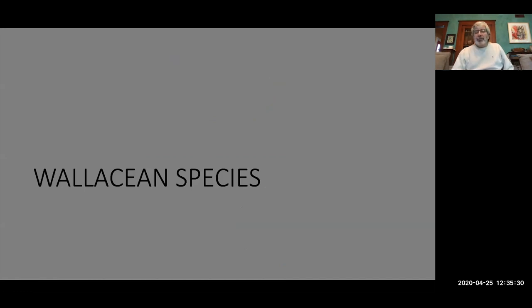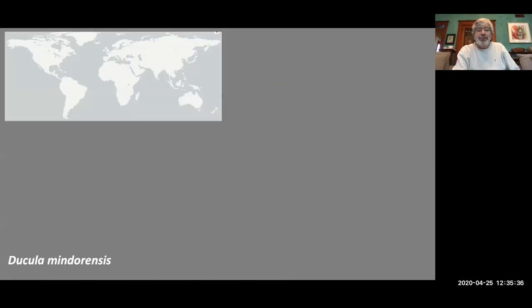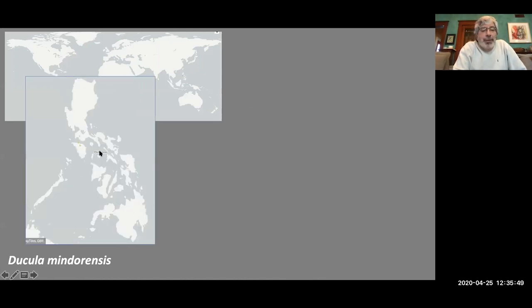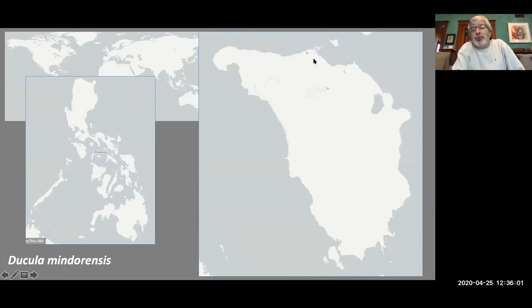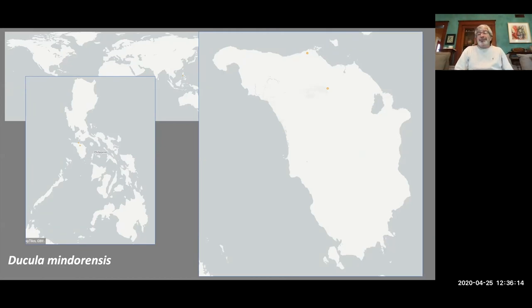First, let's look at some Wallacean species. This is probably the easiest set. Here is a dove, Ducula mindurensis. You can't see it, but there's one place where it is found. As we zoom in, we can see it in two points, both on the island of Mindoro — hence its specific epithet. Zooming in still more, we can see it's known from two places, though it obviously occurs across more of the island of Mindoro.